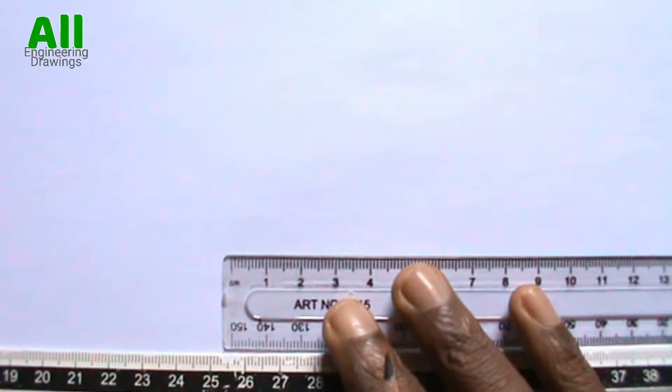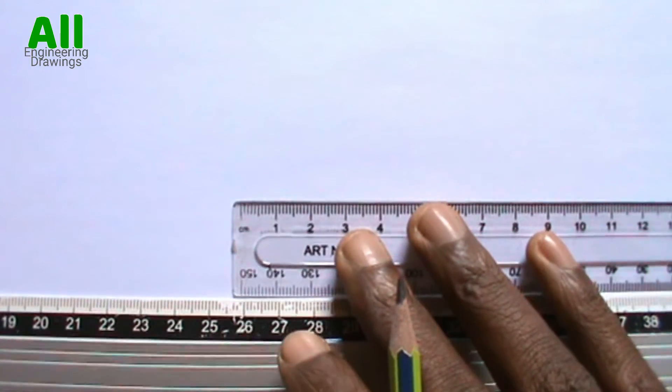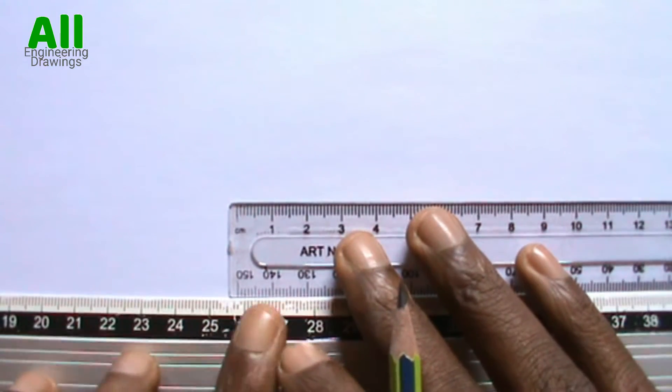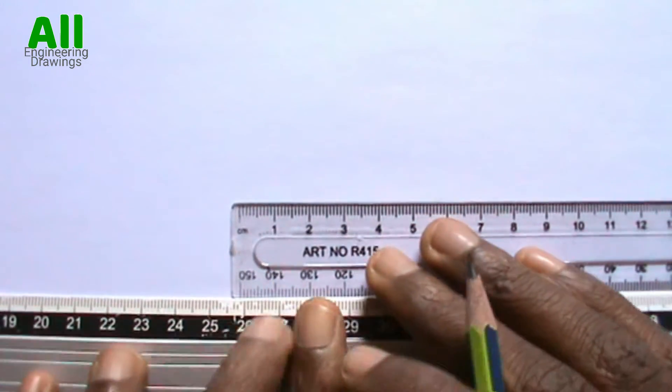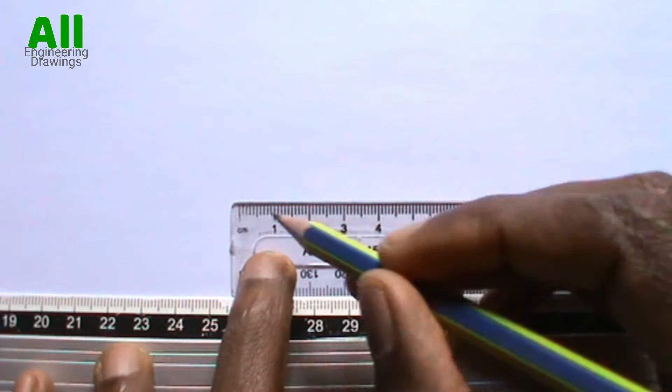To draw a thin horizontal line, you have to use your T2 to support your ruler this way. Then you can now draw the horizontal line to the required length.